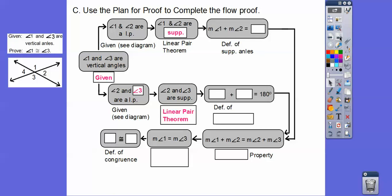Your teacher will take either one. Then we write definition of supplementary angles. If angles 1 and 2 are supplementary, then the measure of angle 1 plus angle 2 must equal 180. Down here, since angles 2 and 3 are supplementary, the measure of angle 2 plus angle 3 must equal 180. That reason is also definition of supplementary angles.